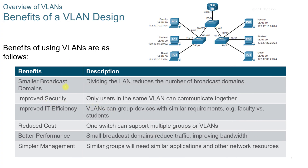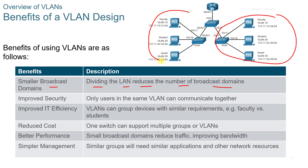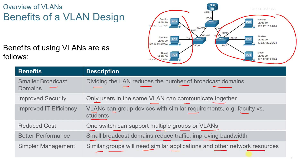Some benefits of using VLANs: you can have a smaller broadcast domain that divides the LAN and reduces the number of broadcast domains. It has improved security, so only users in the same VLAN can communicate together. VLANs can group devices with similar requirements, such as faculty versus students. You can also have reduced cost — one switch can support multiple VLANs instead of having two switches for two different LANs. You also get better performance, as small broadcast domains reduce traffic and improve bandwidth, and similar groups sharing resources makes management simpler.